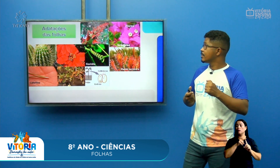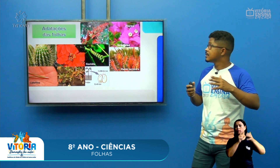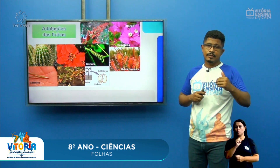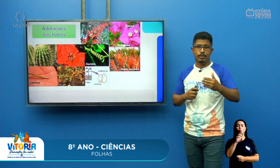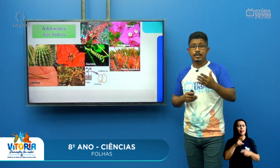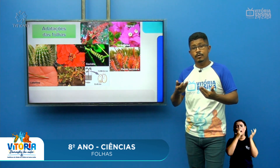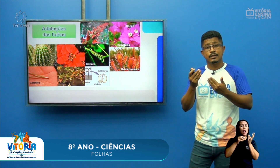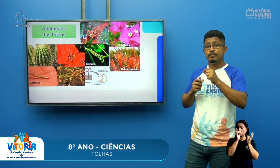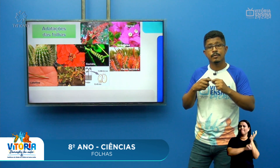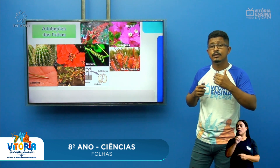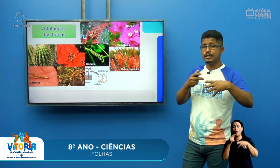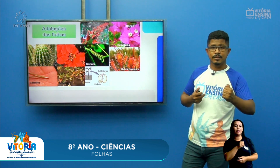Outro tipo de adaptação das folhas são os aculeus. Um aculeu é diferente de um espinho — na verdade, uma roseira não tem espinhos, ela tem aculeus. A diferença é que o aculeu fica mais na pelezinha da planta e é fácil de remover, enquanto um espinho fica bem dentro do caule. Os aculeus também servem para proteger a planta contra predadores que quisessem consumi-la.